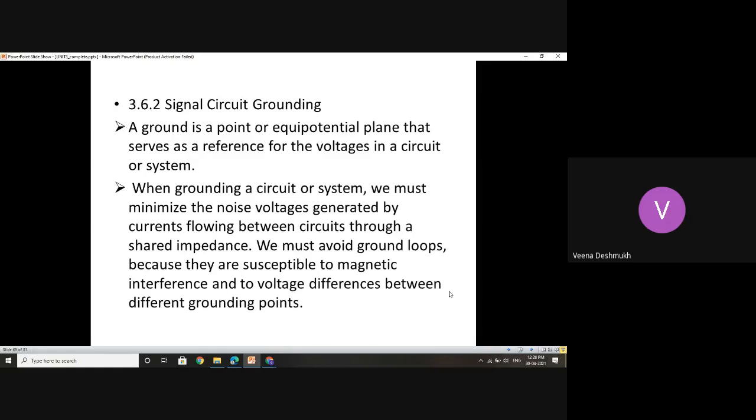Now what exactly does this grounding mean? So ground is basically in all the electronic networks a point or an equipotential plane that serves as a reference for the voltages in a circuit or a system. This we have tried even in network analysis where by changing the ground point, how exactly there will be slight variation in the currents or voltages happen.